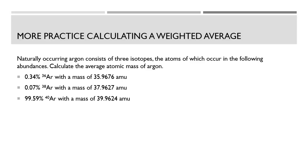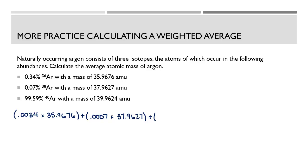Now pause the video and try to solve this problem on your own. Naturally occurring argon has three isotopes. 0.34% has a mass of 35.9676 AMU, 0.07% has a mass of 37.9627 AMU, and the rest has a mass of 39.9624 AMU. A common mistake: when converting a percentage that already contains a decimal into a decimal, remember to move the decimal twice. So 0.34% equals 0.0034, 0.07% equals 0.0007, and 99.59% equals 0.9959.